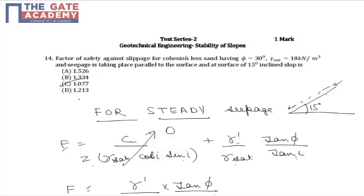This is given as a cohesionless soil, which means c equals 0. Hence the first term reduces to 0, reducing the expression to: gamma dash upon gamma sat times tan phi upon tan i.